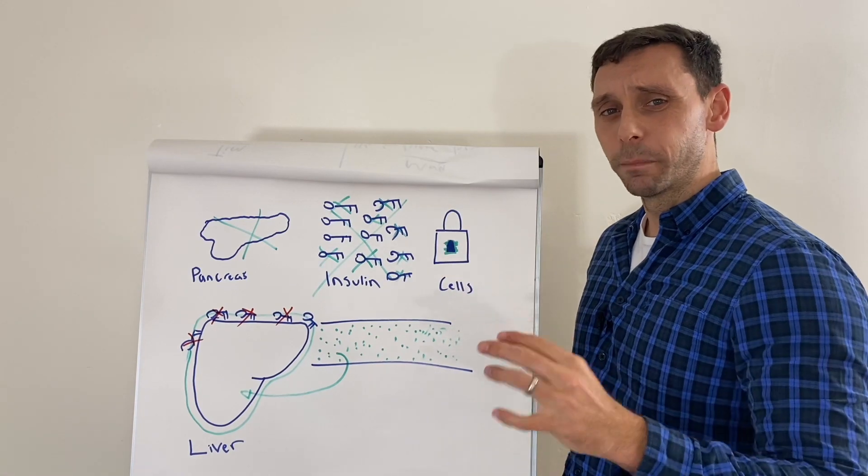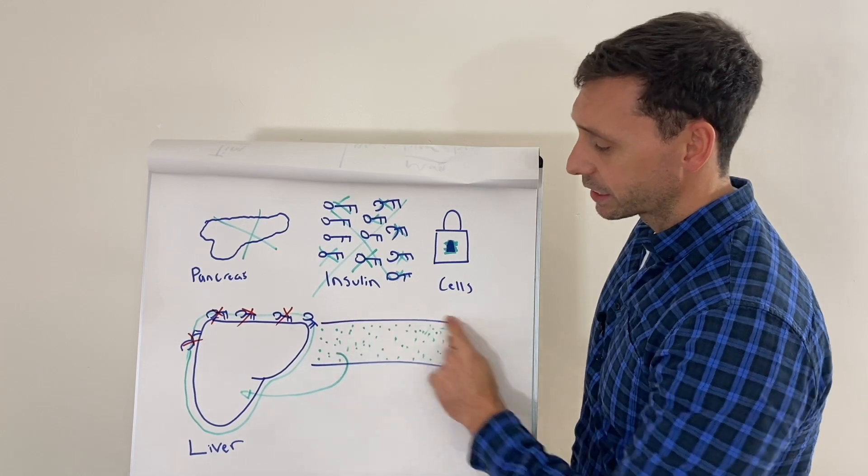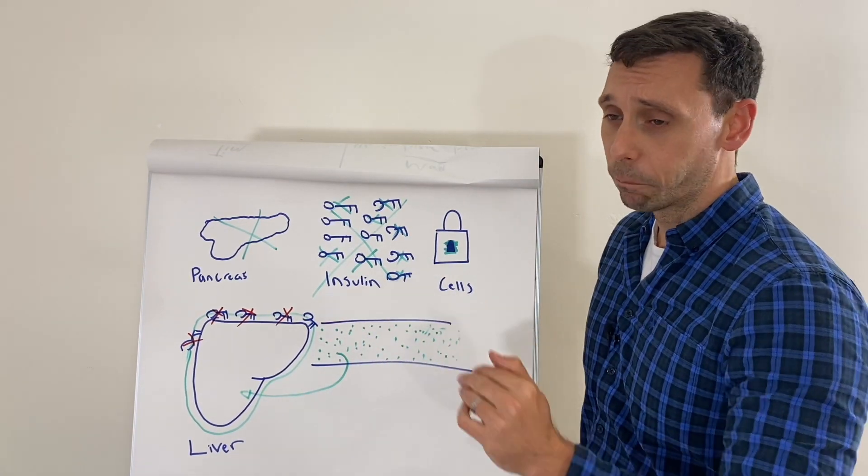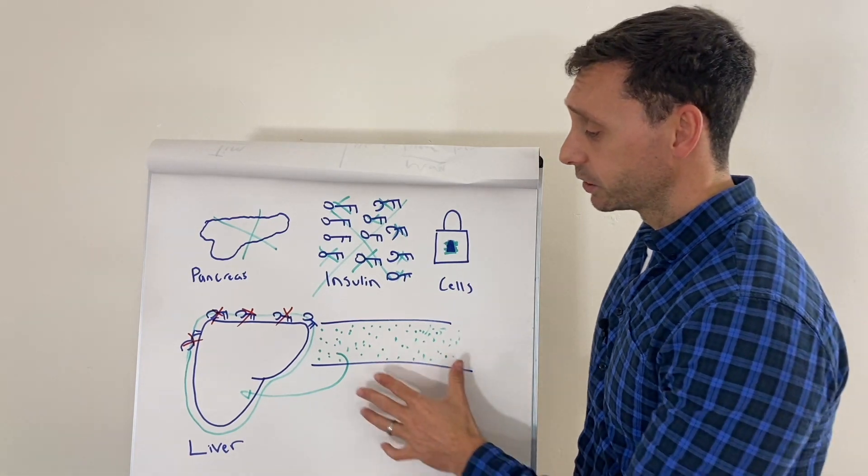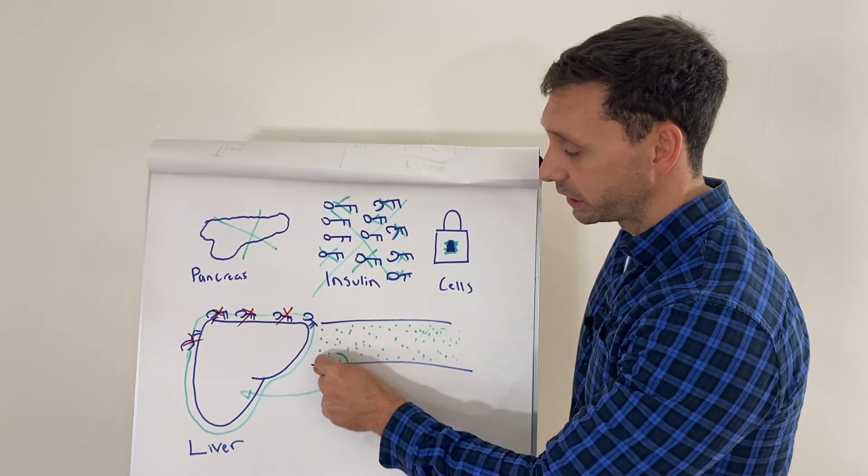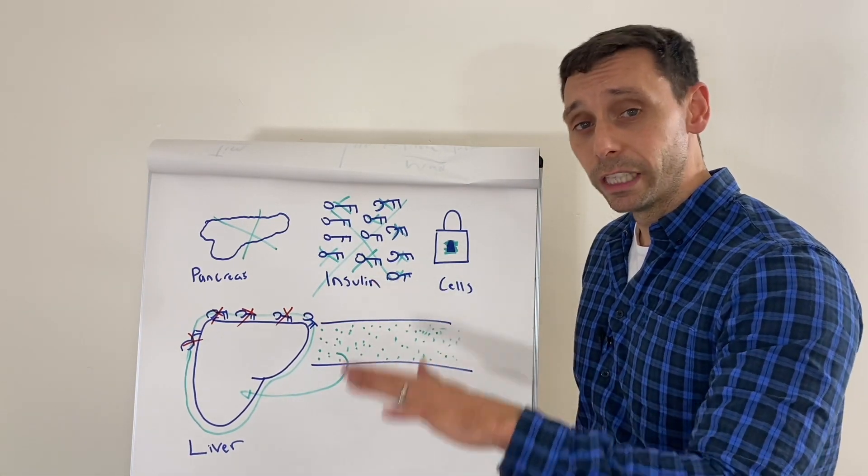And anything you add on top of that exacerbates the condition. Most people think about it the other way around. They'll look at the food and what the glucose rises after eating. But actually it's the baseline level that we're working from. And that's the one we want to address in the first instance. And again, certain medications will work on this. Metformin reduces the amount of glucose that the liver is releasing. So your baseline glucose level is much lower.